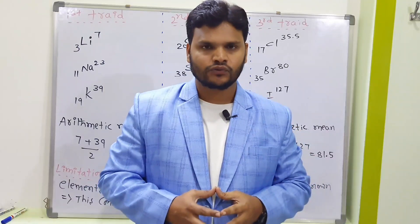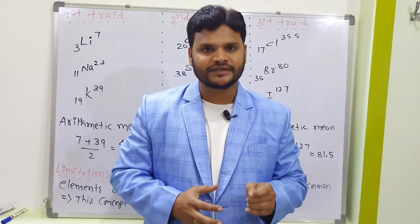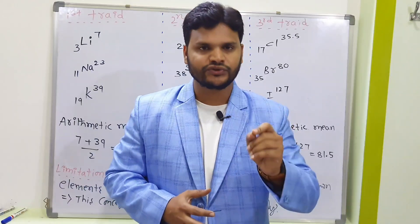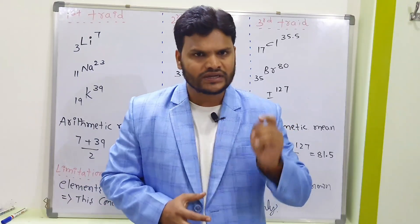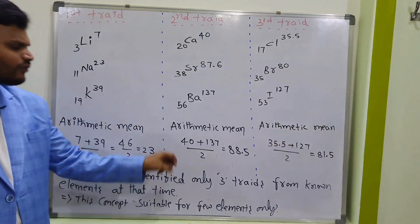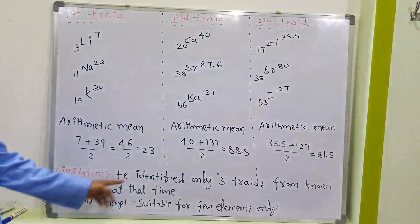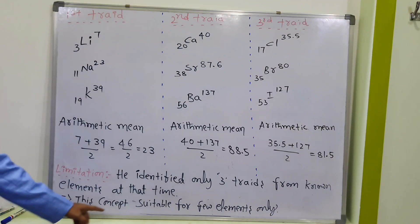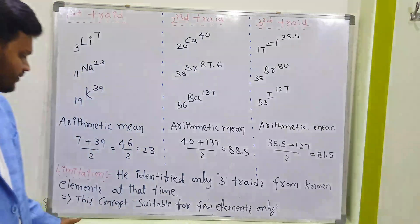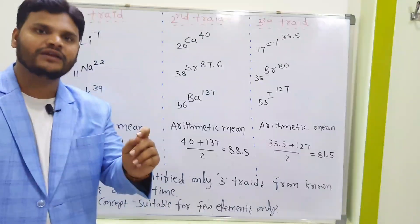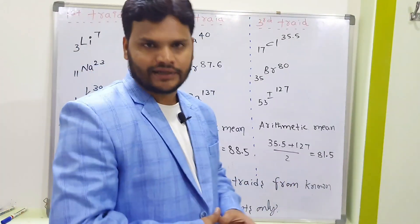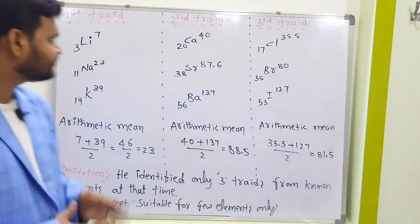At that time only 53 elements were known, and this concept had a limitation. He identified only three triads from the known elements at that time, so this concept was suitable for only a few elements. The three triads are: first triad, second triad, and third triad.